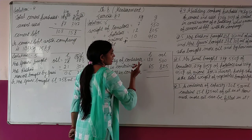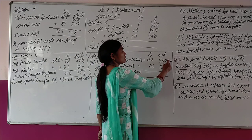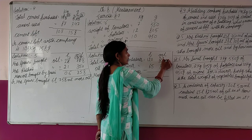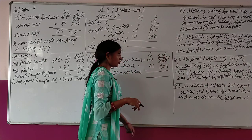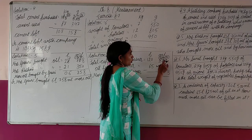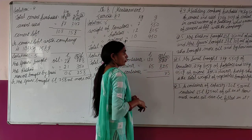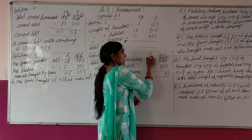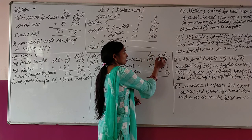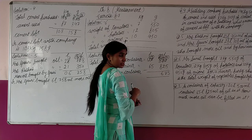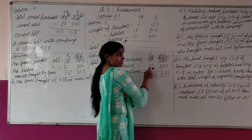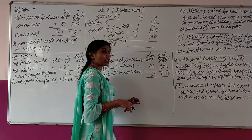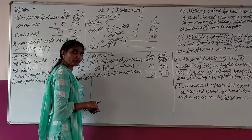Subtraction: 0 minus 5 not possible — borrow. The zero also needs to borrow from next, giving 4, 9, 10. 10 minus 5 is 5. 2 minus 9 is not possible — borrow, giving 14 minus 8 is 6, 9 minus 5 is 4. Then 1 minus 6 not possible — borrow, 11 minus 6 is 5. Result: 54 liter 675 milliliter more oil can be filled in the container.